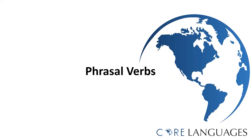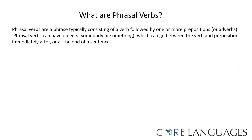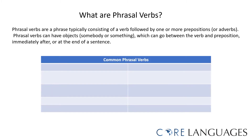Phrasal verbs are phrases that typically consist of a verb and one or more prepositions or adverbs. They can have objects, which can be somebody or something, which can go between the verb and the preposition, immediately after, or at the end of a sentence. Here are some examples.